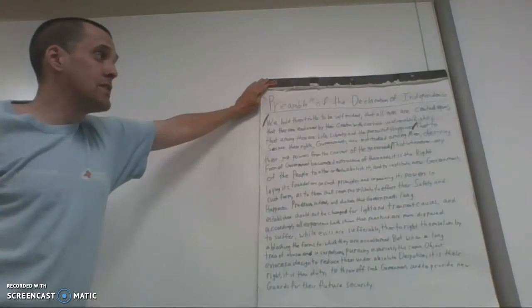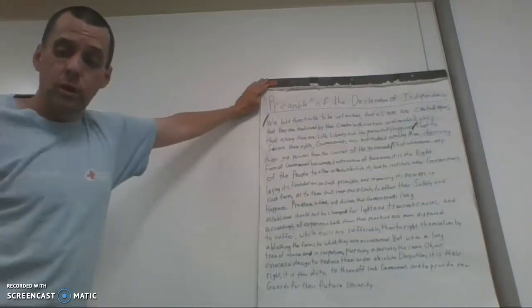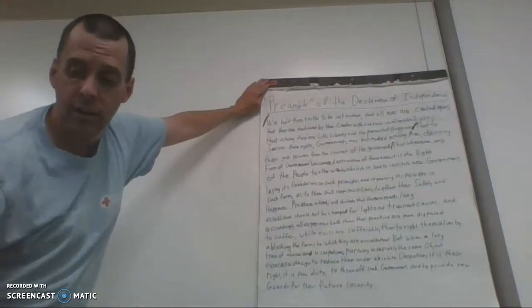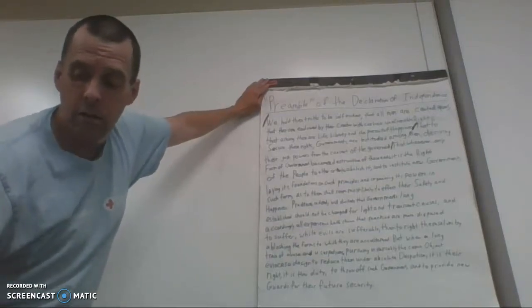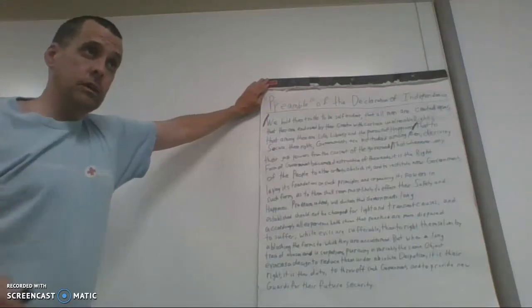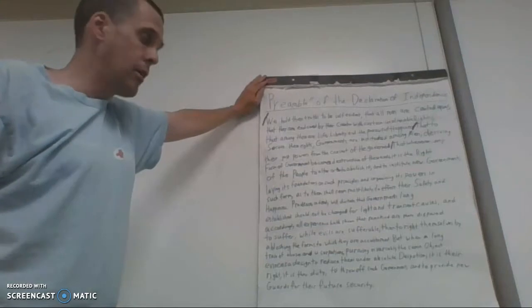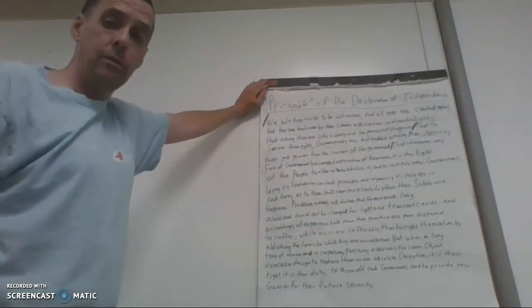Now remember, primary source documents are documents that were written at that time period by the people involved. So the Preamble of the Declaration of Independence was written by the Founding Fathers to tell the King of England and the government of the United Kingdom at the time, or the British Empire, that they were no longer interested in being part of the country and that they wanted to go off and be on their own.